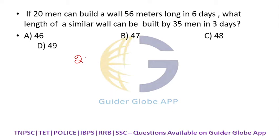Input is 20 men. What is 56 meters? This is output. 6 days, that is input. This will be equivalent to what length of a similar wall, that is output.